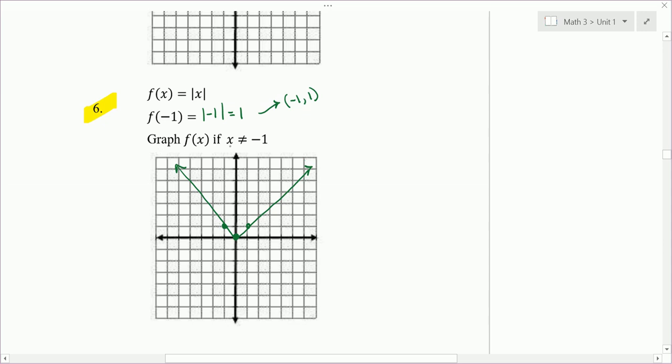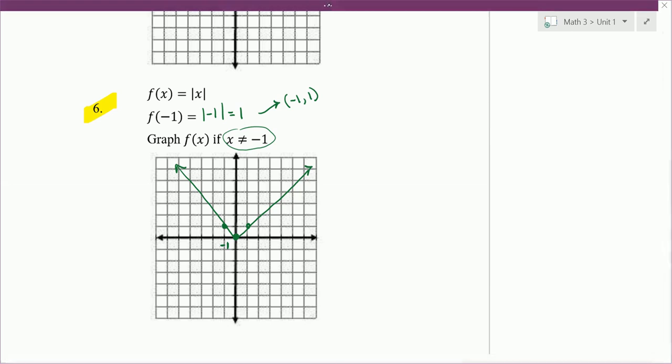And then here, this is a little funny the way it's written. It says graph the function if x is not equal to negative 1. In other words, graph it everywhere else but at negative 1. So at negative 1, that's the only part I don't want. So we need to put a hole in our graph.